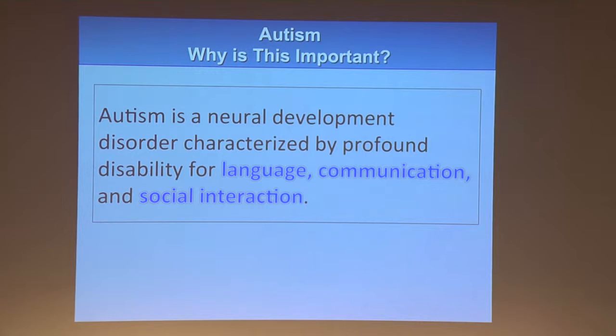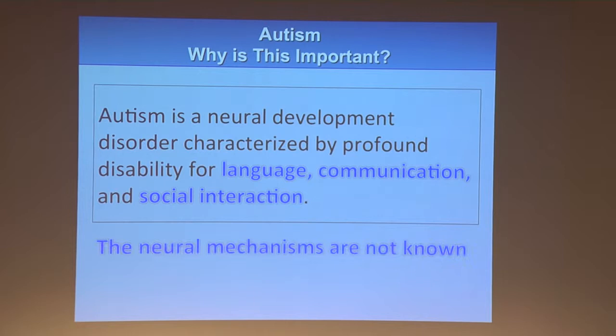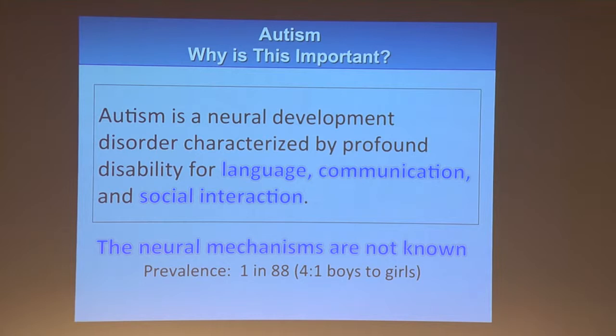So what does this have to do with autism? Autism is a neurodevelopmental disorder characterized by severe disabilities in language, communication, and social interaction. According to recent CDC figures, one out of 88 children born is somewhere on the autism spectrum. Whether it's 1 in 88, 1 in 100, or even 1 in 200, it is a lot — this is a very important neurodevelopmental disorder to understand. And the truth is that the neural mechanisms for autism are unknown.